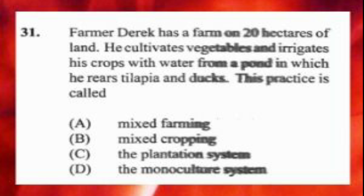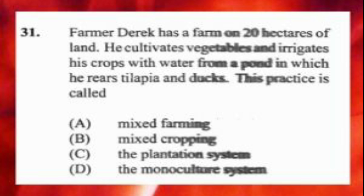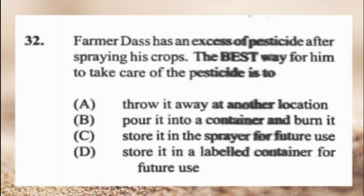Question number thirty-one: farmer Derrick has a farm on 20 hectares where he cultivates vegetables and irrigates crops with water from a pond in which tilapia and ducks are raised. This practice is called A) mixed farming, B) mixed cropping, C) plantation system, D) monoculture system. The answer is A, mixed farming — plants and animals on the same farm. Mixed cropping is different crops on the same farm.